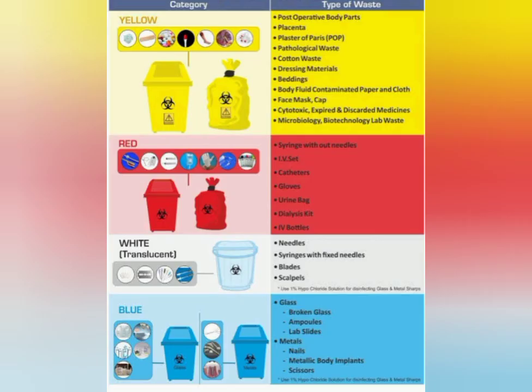The next IEC banner you need to display is Biomedical Waste Management. All HWCs should maintain this banner. You should know all the different BMW waste management buckets and their color codes. I have made a separate video regarding BMW — go through the description and watch it. Let's do a quick revision: for the green bucket, you will dispose all general waste — kitchen waste, paper, tissues, water bottles, and degradable items.